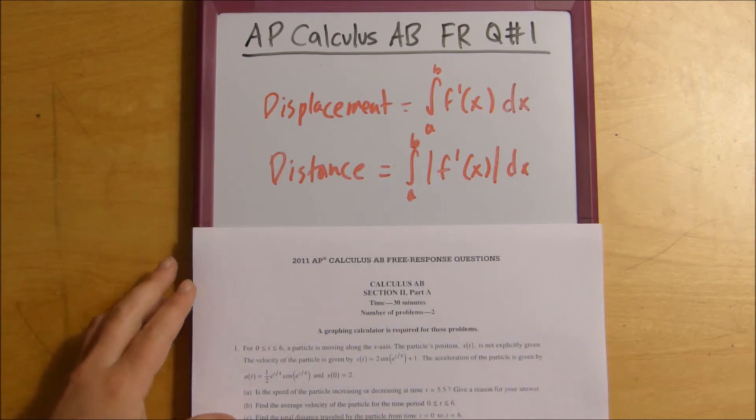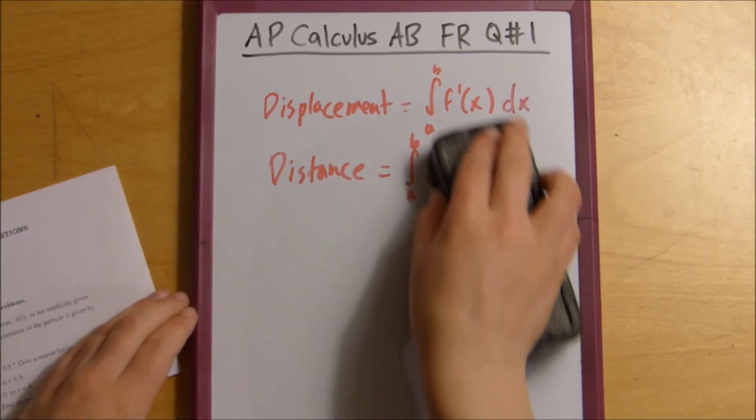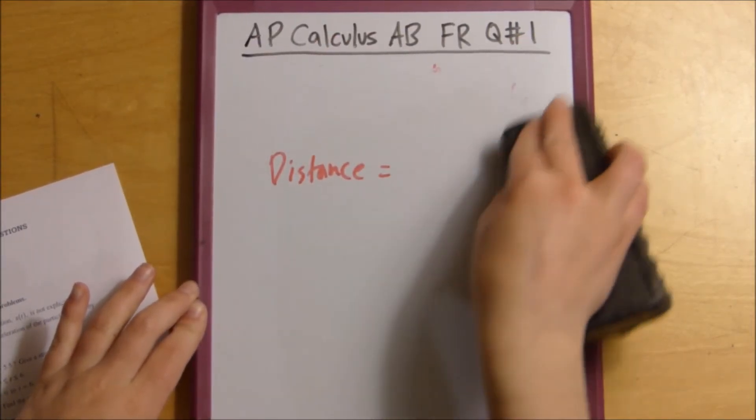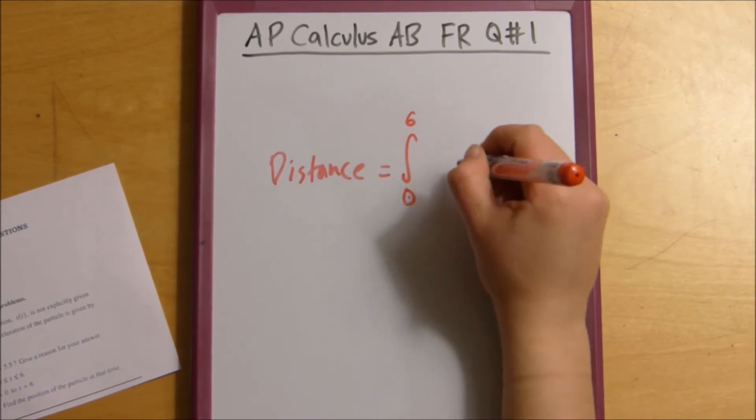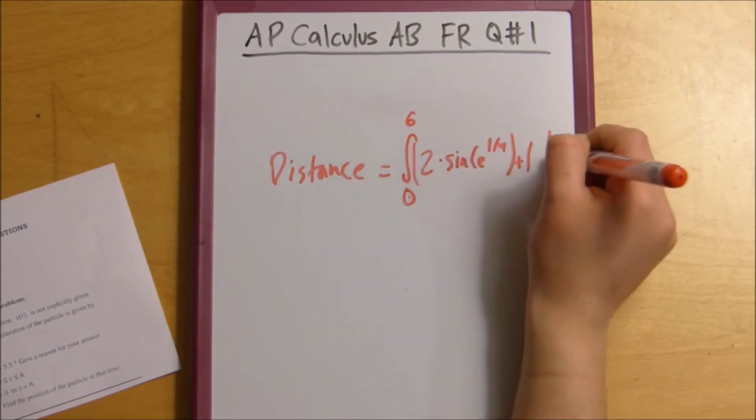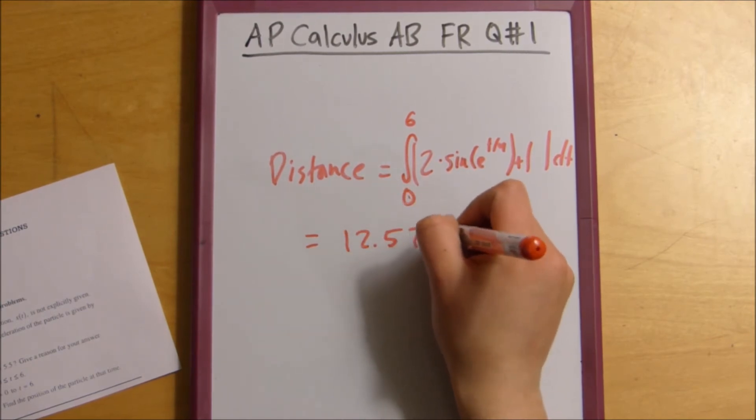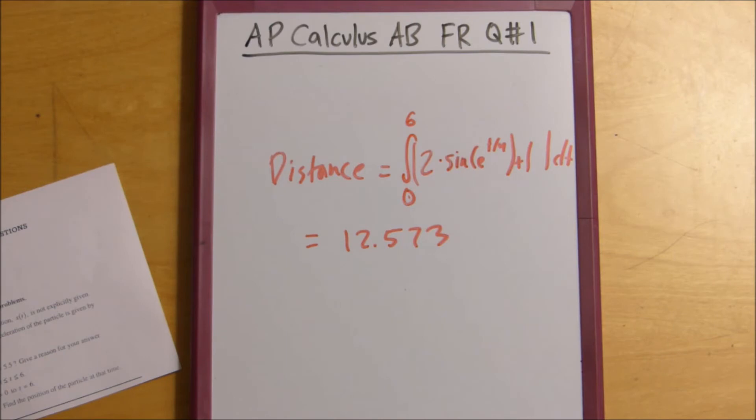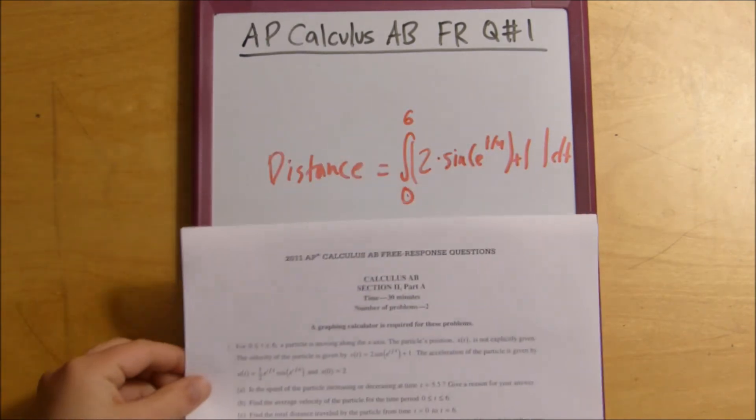So, all you would do is you would plug in 0 for a, 6 for b, and then your velocity for your f prime of x and that would find you your distance. So, from 0 to 6 of 2 times sin et to the 4 plus 1 absolute value bars dt. So, if you plug that in, you end up getting the distance is 12.573. And since there were no units given in the problem, you would not have to provide any units.